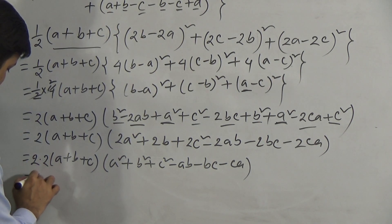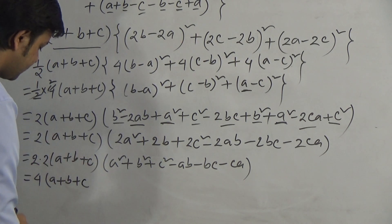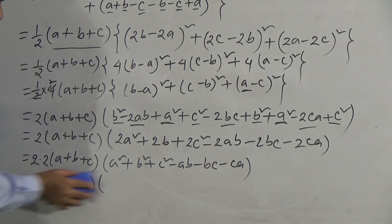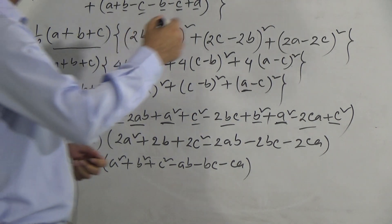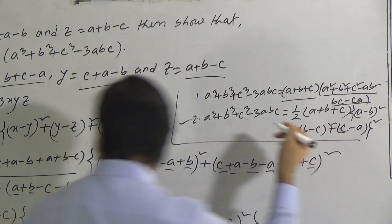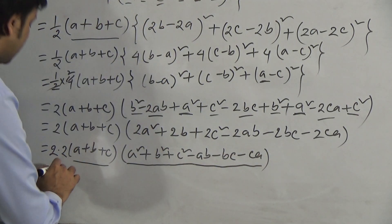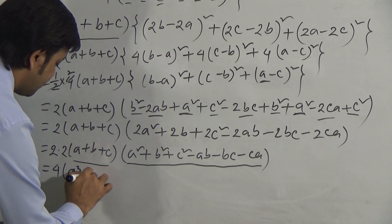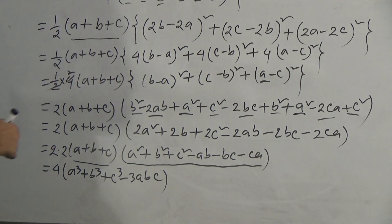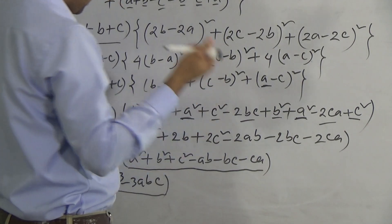Now applying formula 1, (a + b + c)(a² + b² + c² − ab − bc − ca) = a³ + b³ + c³ − 3abc. So this becomes 4(a³ + b³ + c³ − 3abc). Checking the right hand side: RHS = 4(a³ + b³ + c³ − 3abc). Therefore, LHS = RHS, and the identity is proved.